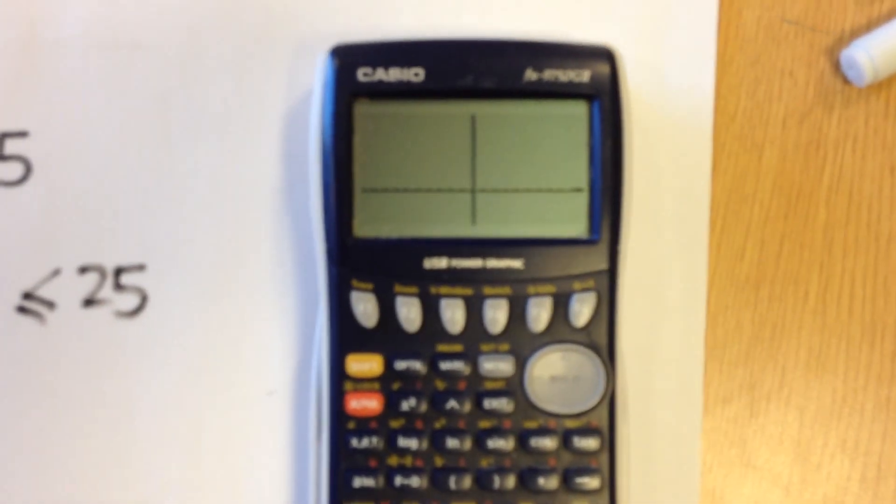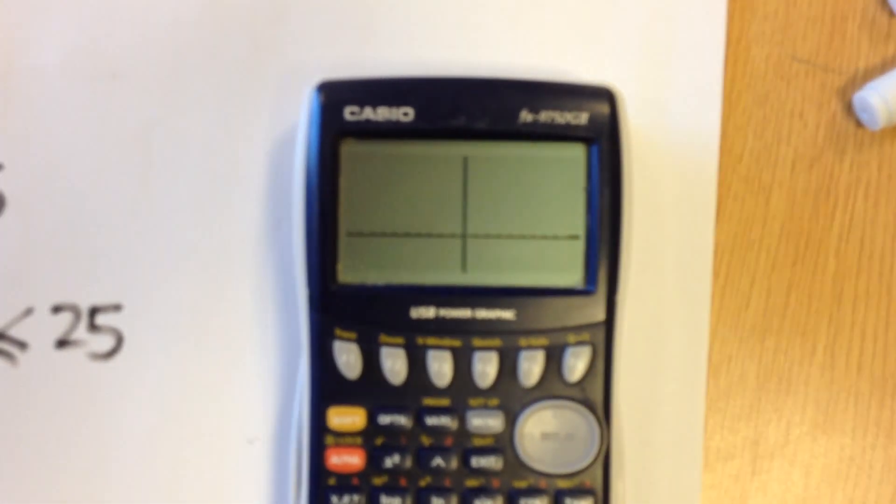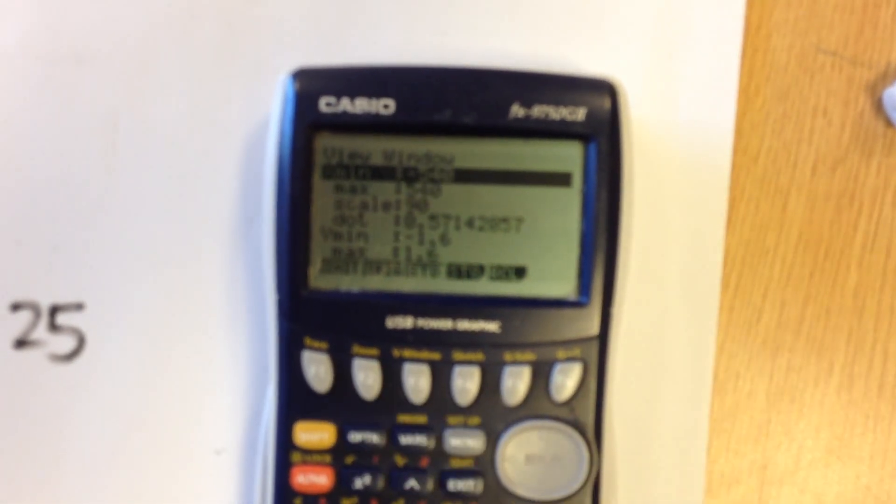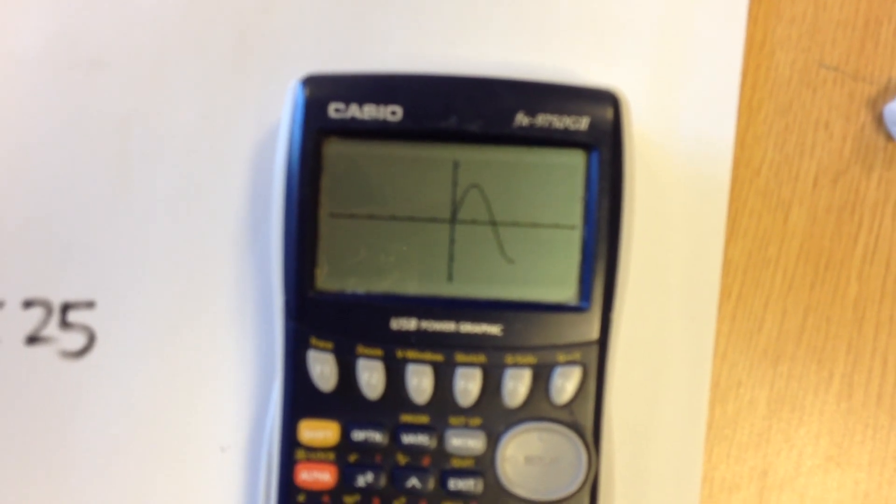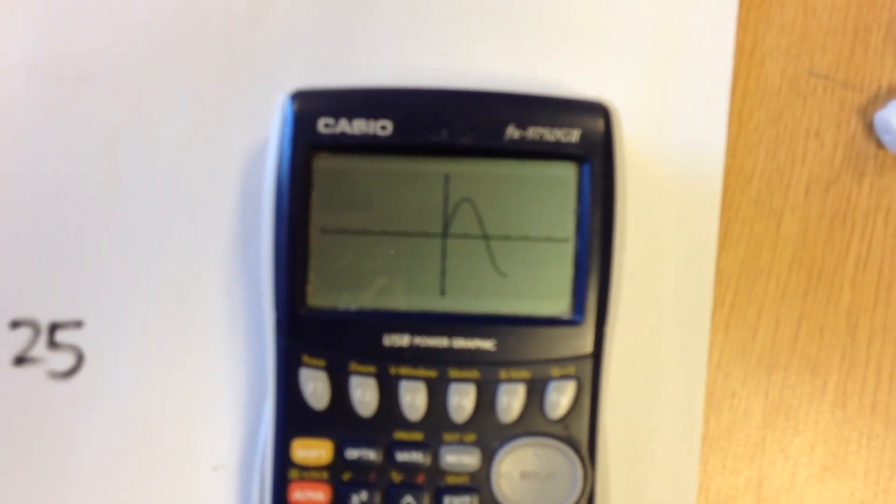Now that's because the axes are still set from what they were before. So if I want to change those, I'm going to go V window and trig, because I'm now using a trig function. If I click on draw, you can see the graph with that restricted domain.